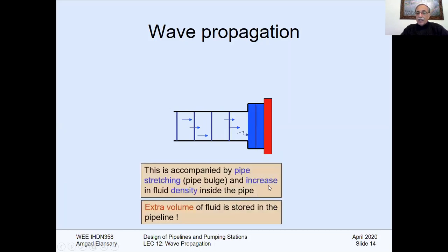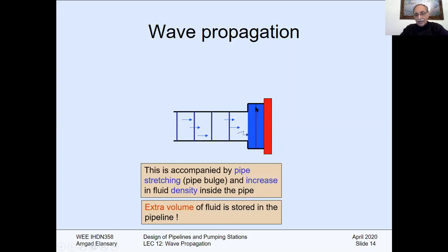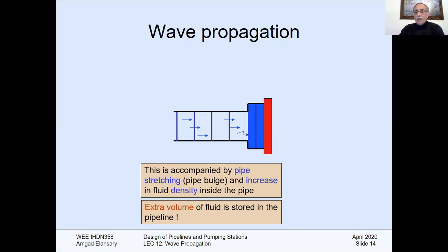This is accompanied by two things as mentioned earlier: stretching in the pipe — called bulk, meaning stretching in the pipe diameter — and an increase in density, which we call compressibility of the liquid. In addition, there is an extra volume of fluid stored in the pipeline due to the increase in the bulk of the pipeline, and there is also elongation stretching of the pipeline. So two things happen in the pipe: an increase in diameter and an increase in length.